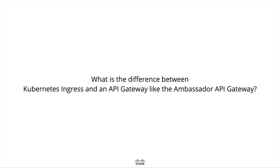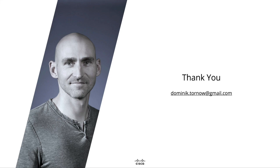Finally, what is the difference between Kubernetes ingress and an API gateway like the Ambassador API Gateway? That, of course, is a trick question. In effect, the concept of Kubernetes ingress is the concept of an API gateway, and the Kubernetes ingress object is a standardized configuration for API gateways. Popular API gateways like the Ambassador API Gateway can be installed to read the ingress object and act as both the ingress controller and the ingress proxy. Thank you for watching Inside Kubernetes Ingress.